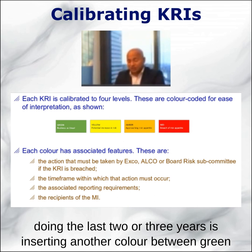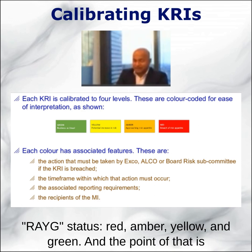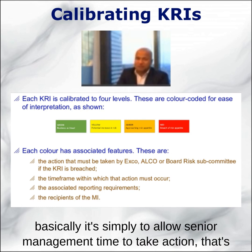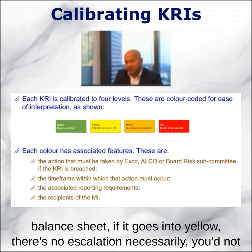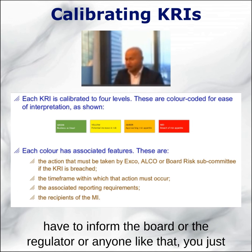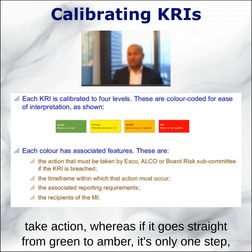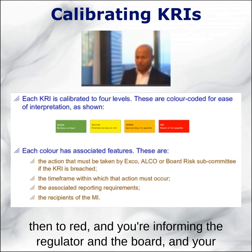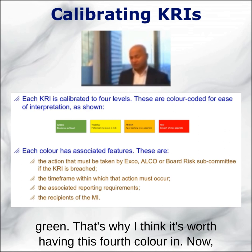What I've been doing the last two or three years is inserting another colour between green and amber, which is yellow. So I don't have a RAG status anymore — I've got a RAGUE status: red, amber, yellow, green. The point of that is simply to allow management time to take action. When it's in green, everything is business as usual. If it goes into yellow, there's no escalation necessary; you don't have to inform the board or the regulator. You just take action to restore back to green. If it goes straight from green to amber, it's only one step to red, and you're informing the regulator and the board, and your escalation process may not have sufficient time to restore back to green. That's why it's worth having this fourth colour.